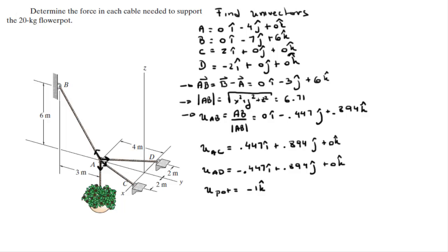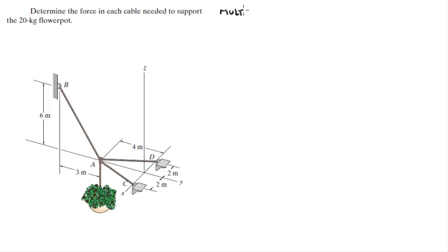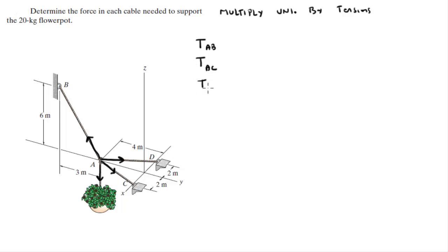Now that we have the unit vectors, the second step is to multiply them by the tensions or forces — tensions in this case since they're cables. We have the same number of tensions as unit vectors: tension AB, tension AC, tension AD, and the tension for the pot, which is simply the weight of the pot. Each tension is multiplied by its respective unit vector.